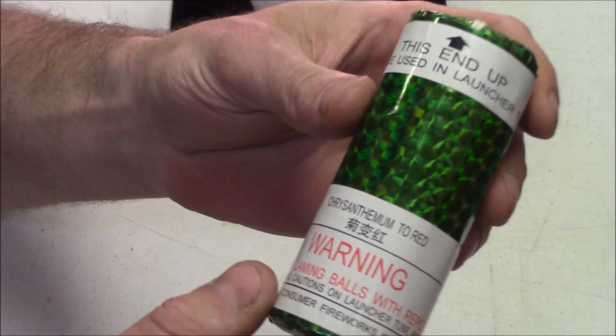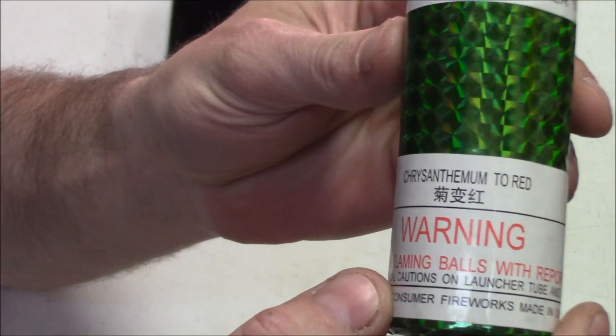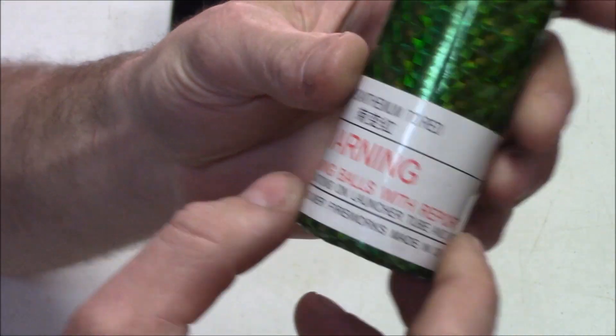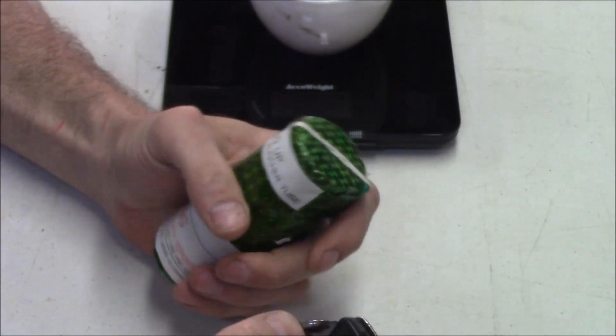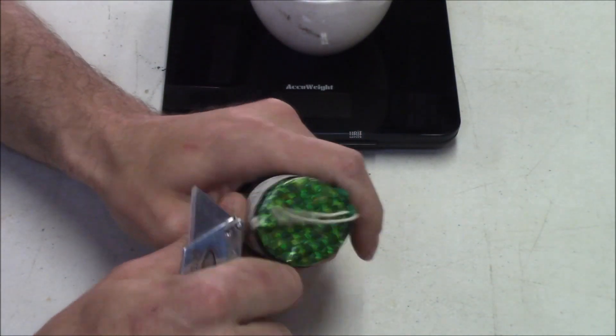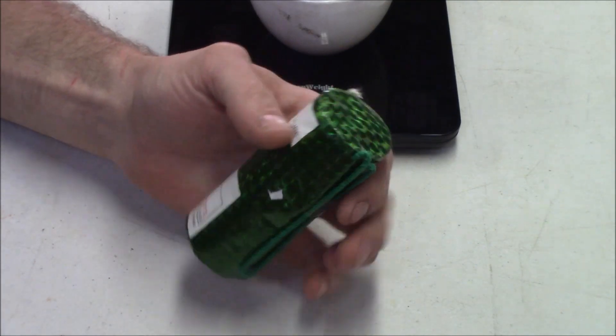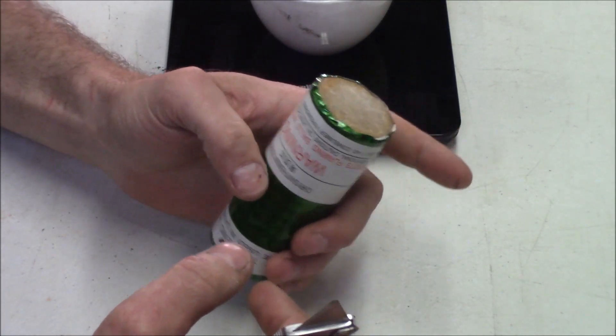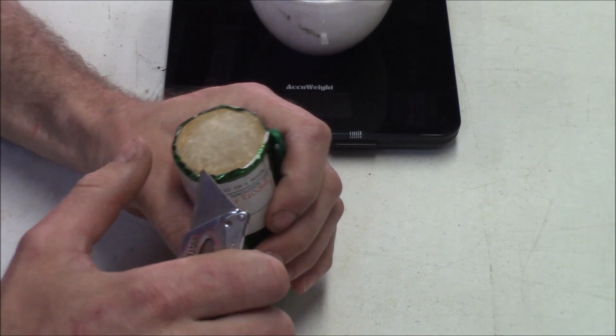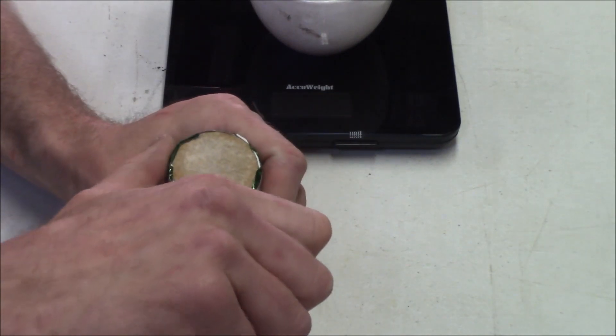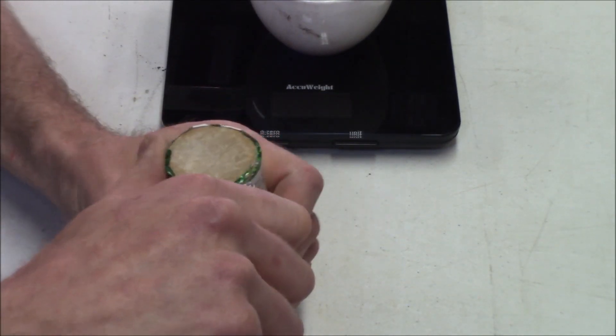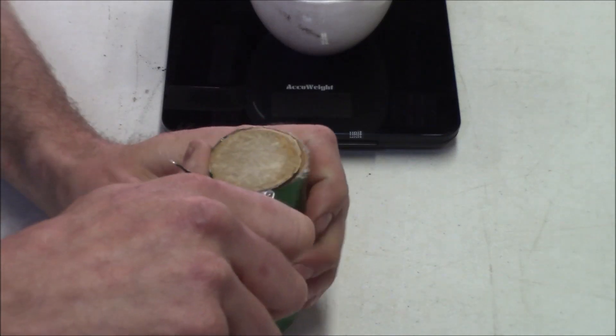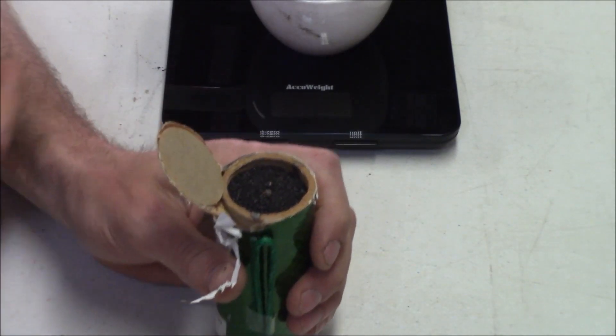All right guys, we're gonna take another look at one of these corn cannons. Gonna do chrysanthemum to red. You know, if I put something out there that says that these are below your average 60 gram, you guys are gonna like burn me at the stake in the comments. So we'll take a look at one more just to be certain.